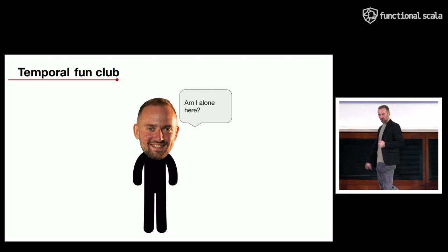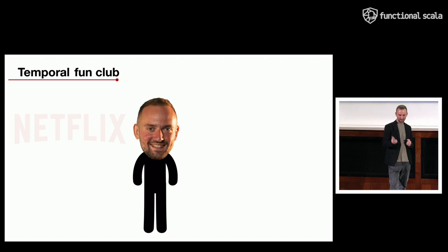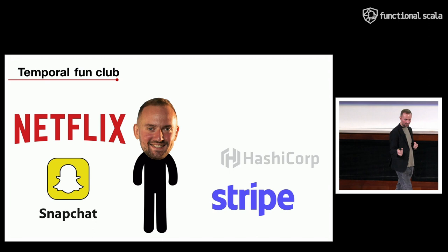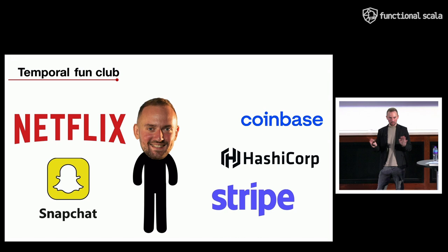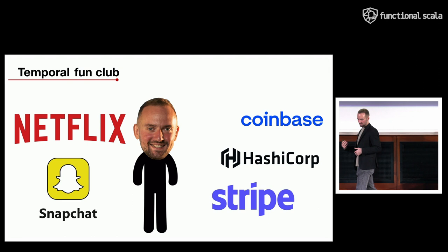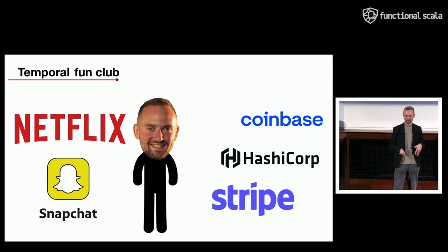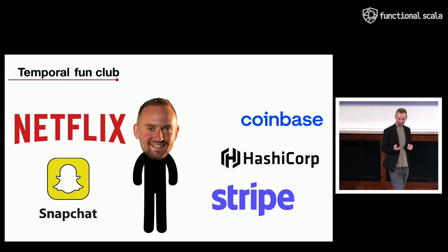Am I alone in the Temporal fan club? No, because Netflix, Snapchat, Stripe, HashiCorp, and Coinbase all use Temporal for their own purposes — Netflix for continuous delivery, Stripe for transactions, Coinbase for crypto, and so on. It simplifies their business processes a lot.